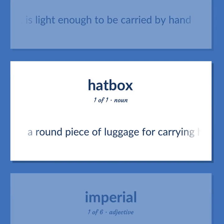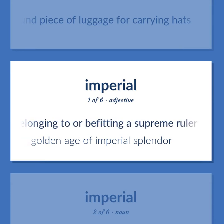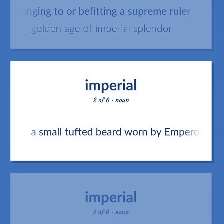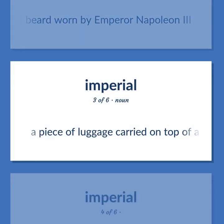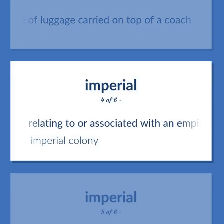A round piece of luggage for carrying hats. Belonging to or befitting a supreme ruler. Golden age of imperial splendor. A small tufted beard worn by Emperor Napoleon III. A piece of luggage carried on top of a coach. Relating to or associated with an empire — imperial colony.